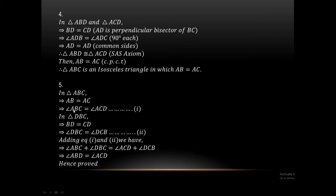AB equals AC, and the angle is equal. Equation one. In triangle DBC, BD equals CD. And in triangle DBC, angle DBC equals angle DCB — equation two. Adding equation one and equation two: ABC plus DBC, and ACD plus DCB.